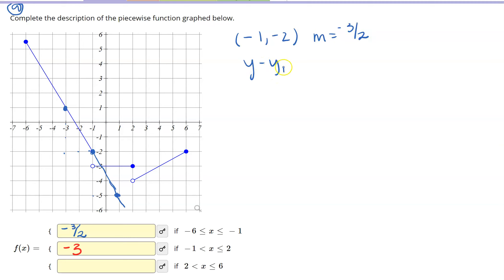I'm just going to find the equation of the line. So I'm going to say y minus y1 is equal to m, x minus x1. So this is y minus negative 2 equal to negative 3 halves, x minus negative 1, and then I'm going to work that out from there.